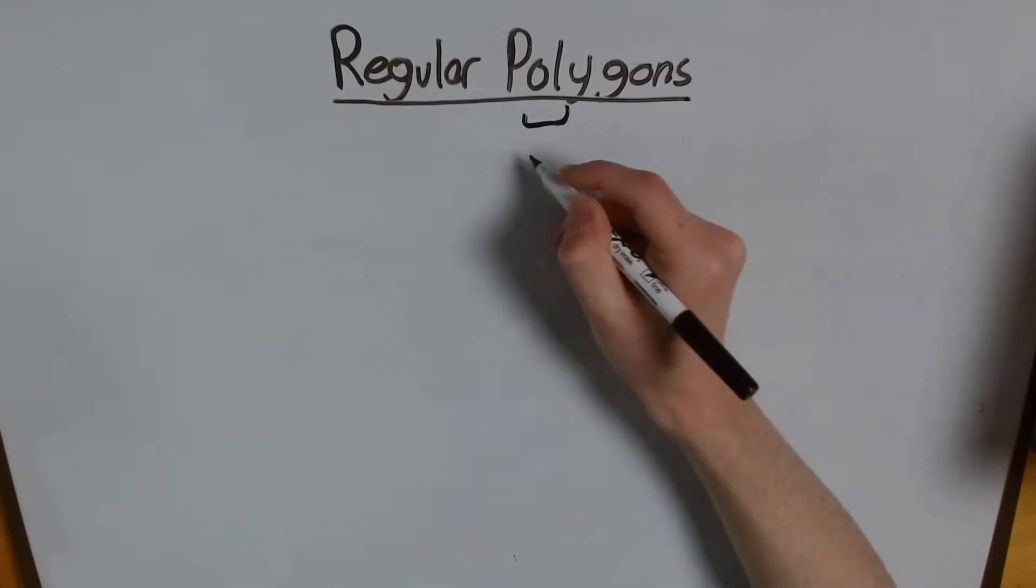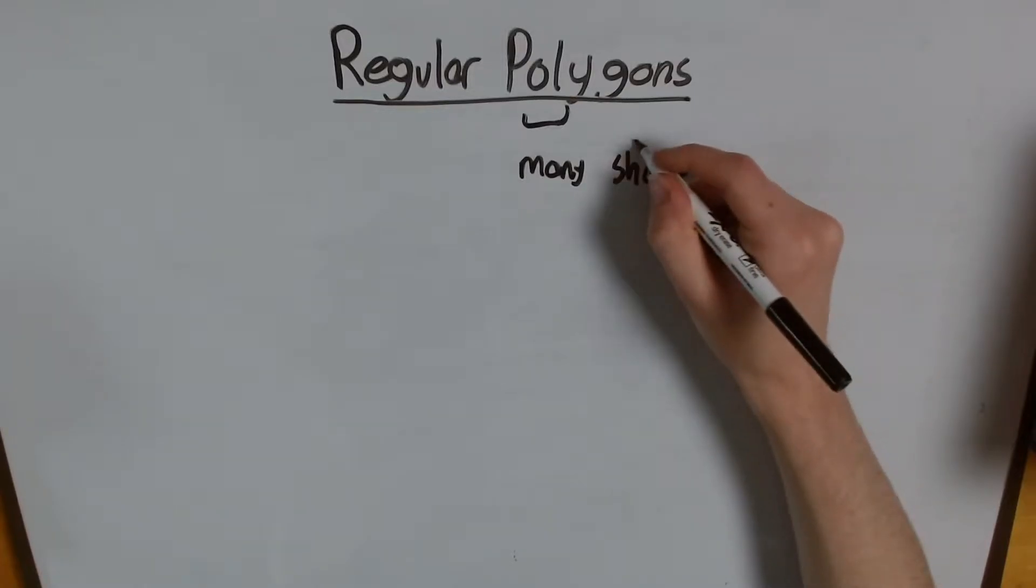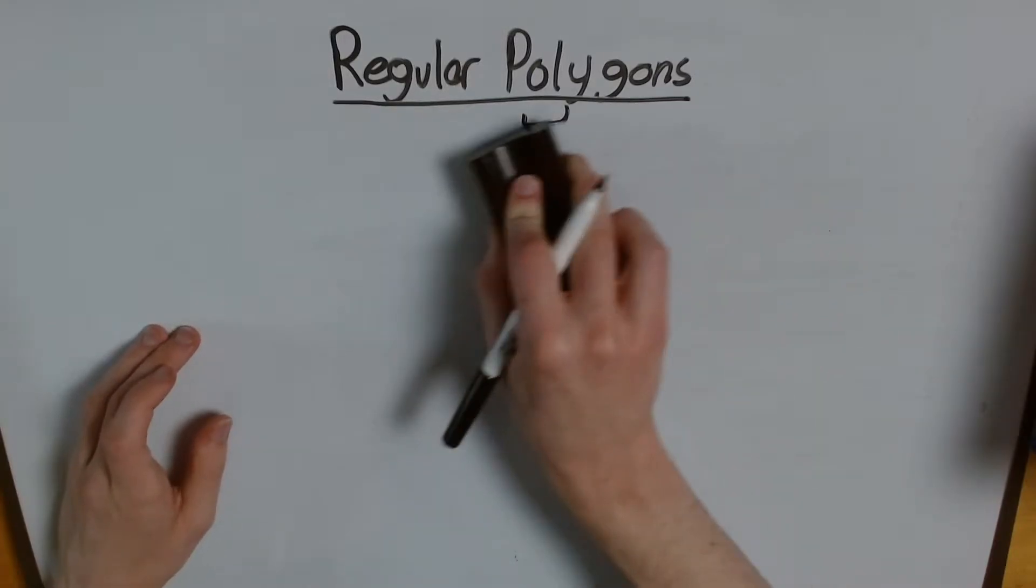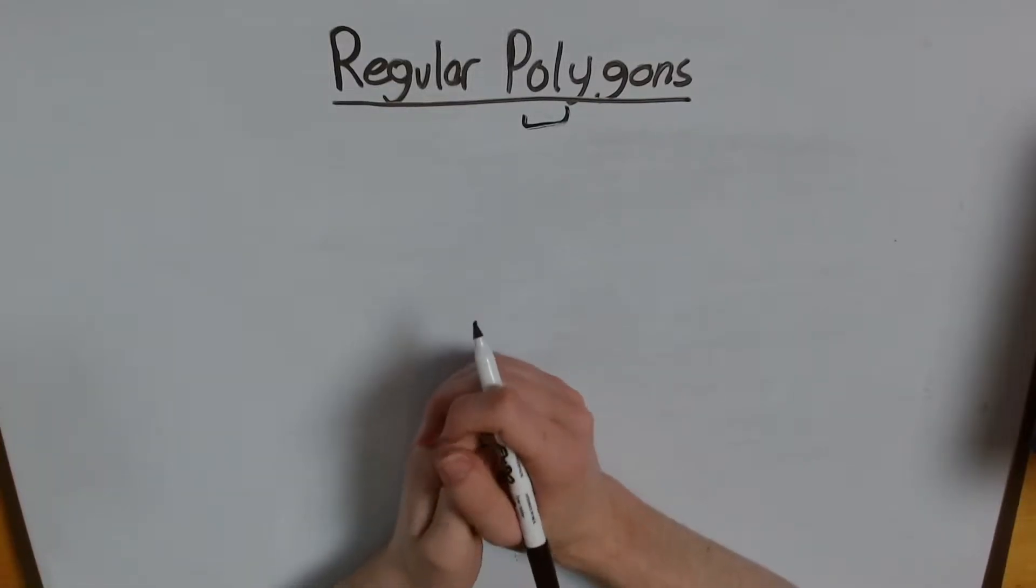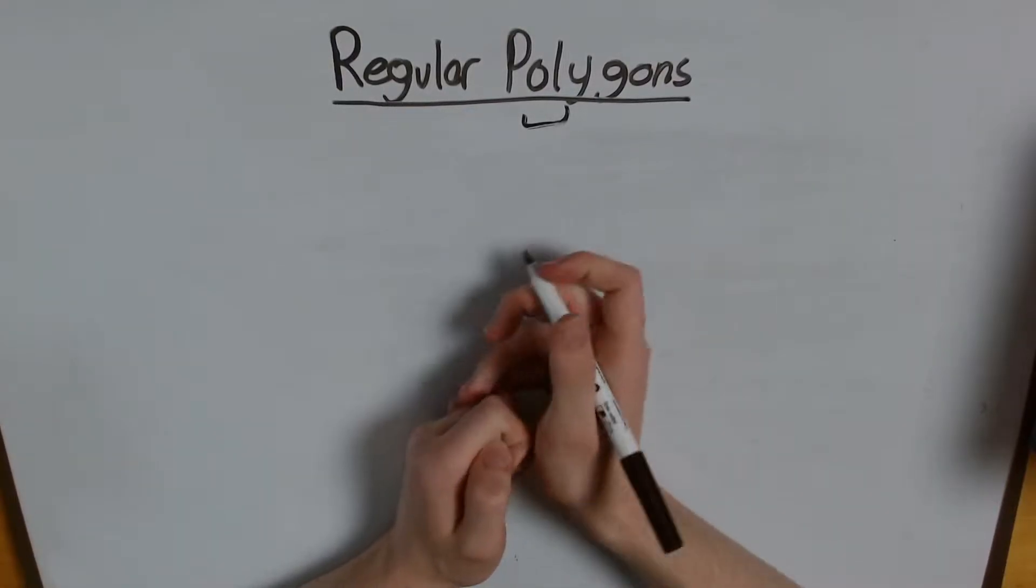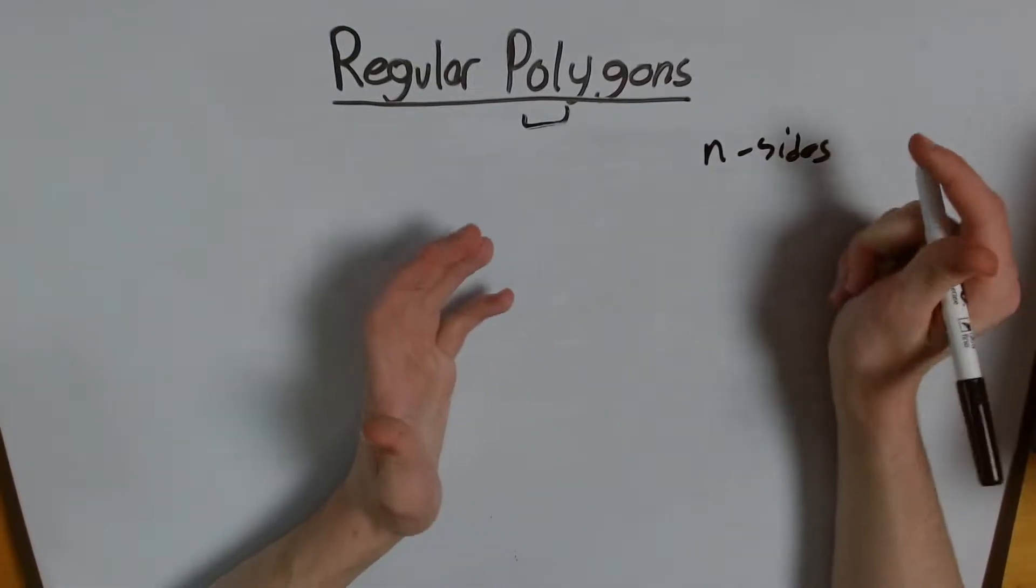Polygons mean, in Greek, because this is originally a Greek term, many shapes, many sides. Now, what does that mean? Well, so far we've been dealing with angles and squares and triangles and lines, and they don't have many sides. The most we've ever worked with was four. The polygons, they can have many, many, many sides. They can have n sides, where n is any number.